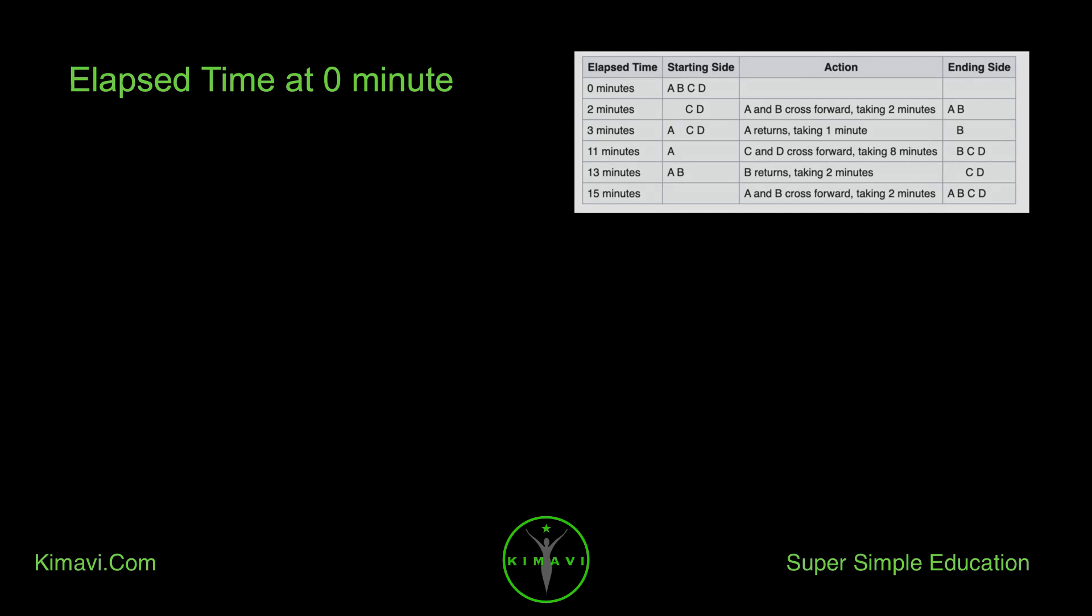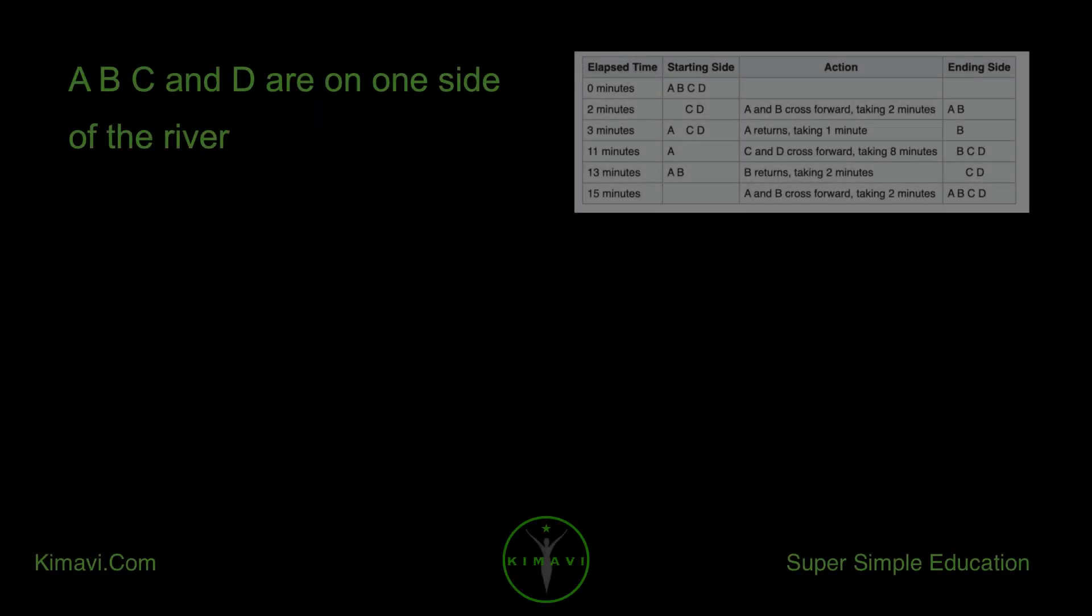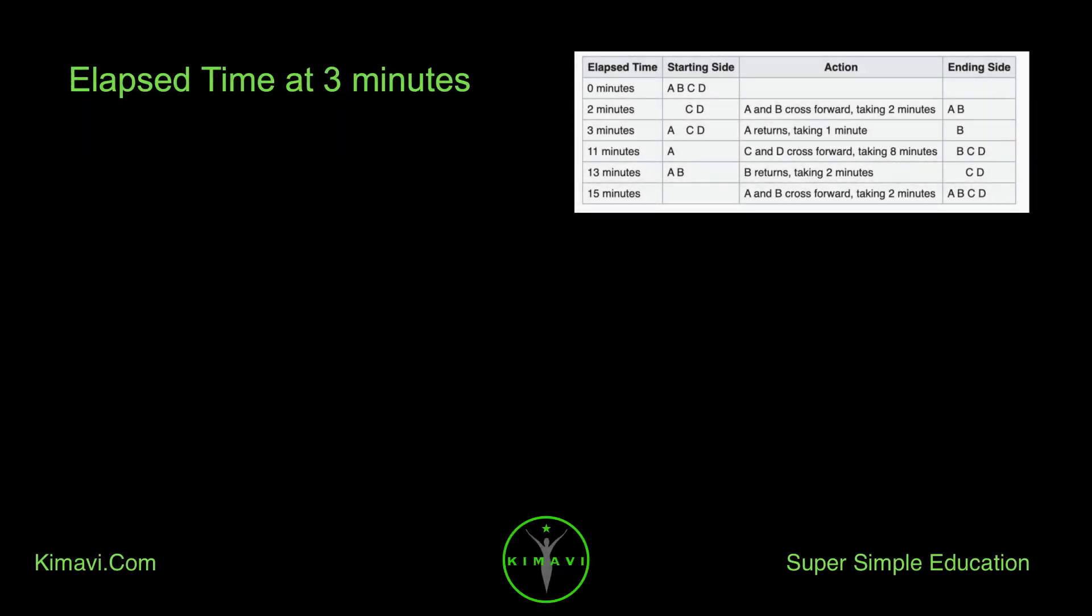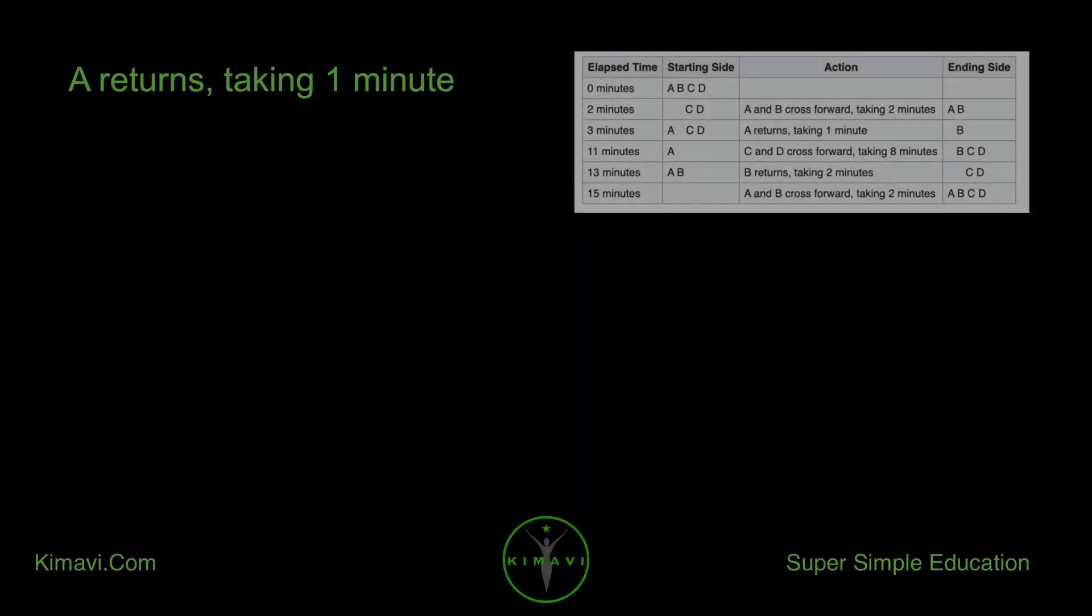Elapsed time at zero minutes: A, B, C, and D are on one side of the river. Elapsed time at two minutes: A and B cross forward, taking two minutes. Elapsed time at three minutes: A returns, taking one minute.